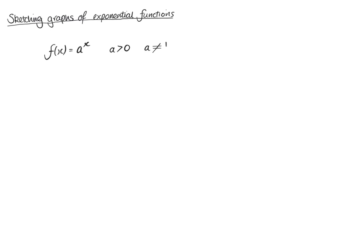We can straight away say two things using our laws of exponentials. We know we're going to get two points every single time. The first point is going to be (0, 1), because a to the 0 equals 1 — anything to the power of 0 is 1 — so when x is 0, y is 1. The other point is that when x is 1, y is a, because a to the 1 equals a for all values of a.